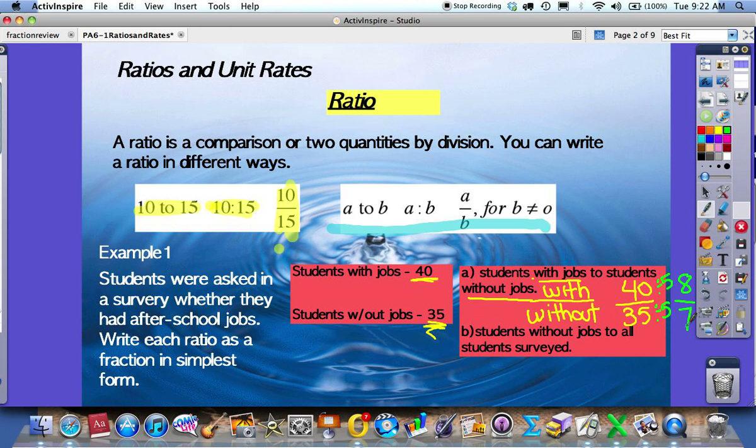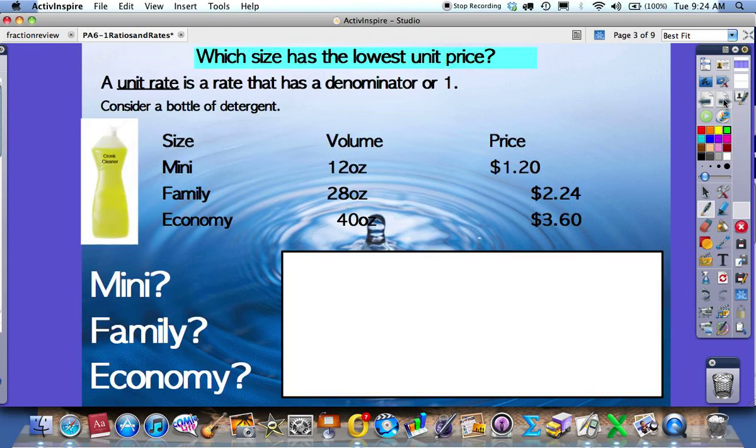Pause the movie now and try letter B. You should have written students without jobs, which is 35 over 40, which would have been reduced to 7 over 8. This is how we write ratios. Make sure you write them in the order that they're stated in the sentence. Let's move on.